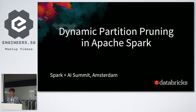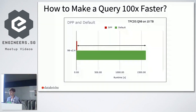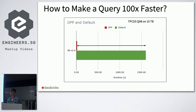So about dynamic partition pruning — we start with this teaser slide that shows performance on some query on a dataset around 10 terabytes. What you'll see is that if you don't use dynamic pruning, the query will run around 20 to 25 minutes. But if you use this feature, it will run around 10 seconds. So now everyone is impressed, and we can see how it works.